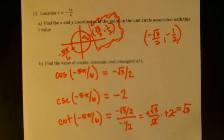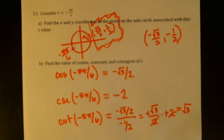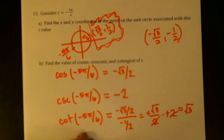So, given a special value, you should be able to find the value of any of the trig functions and the x and y coordinates, which of course you need to find the values of the trig functions. Given x and y coordinates that correspond to a special value, you should be able to find a bunch of special value arc lengths that match with that, and you should be able to find the values of all six trig functions. All right, thanks for watching.